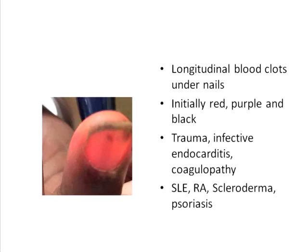Splinter hemorrhages are seen in the nail beds and are visualized by illuminating through the nail. They are longitudinal blood clots that may initially appear red, subsequently changing to purple and brown, and even black in late stages. The commonest cause is trauma, though they are occasionally seen in infective endocarditis.